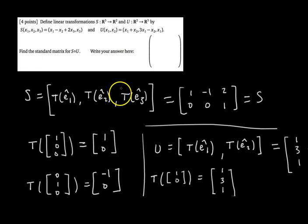The main idea in this video is that to find the standard matrix of any transformation, you take the columns of the identity matrix, plug them into the transformation, and whatever you get as output forms the columns of the standard matrix. This works every single time. In the next video of this transformation miniseries, we'll talk about how to determine when a transformation is linear.